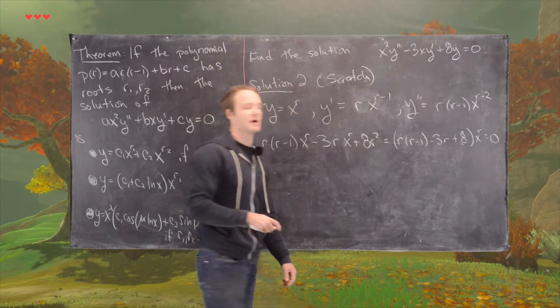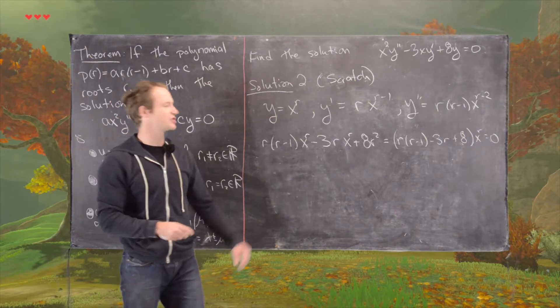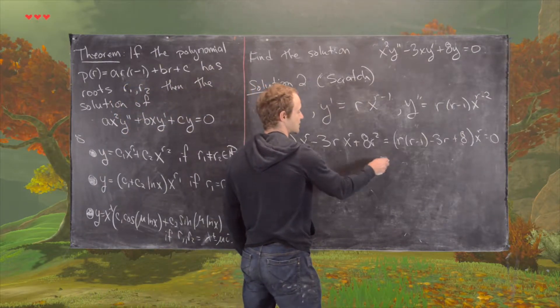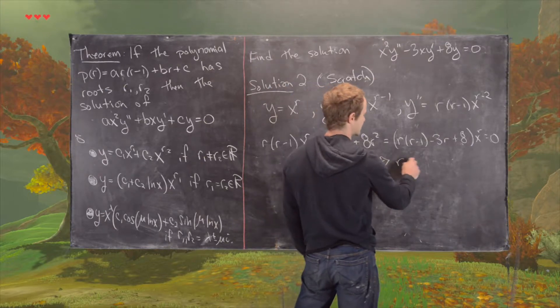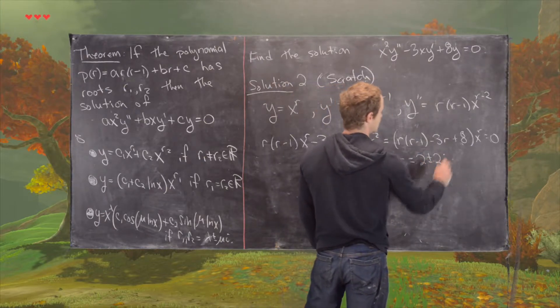Notice this is the same polynomial that we had in the previous solution. So I'll skip how to solve that and just jump right to the solution. That means r equals 2 plus minus 2i.